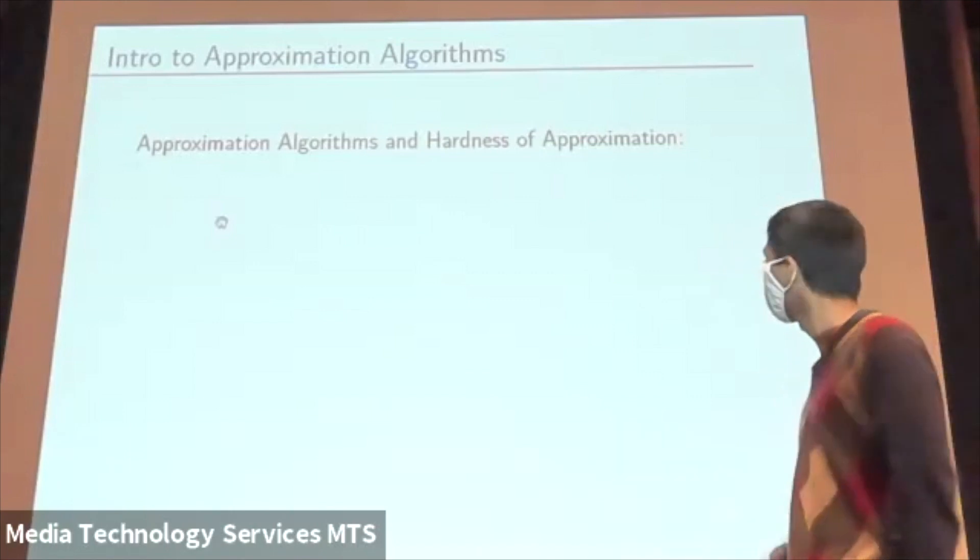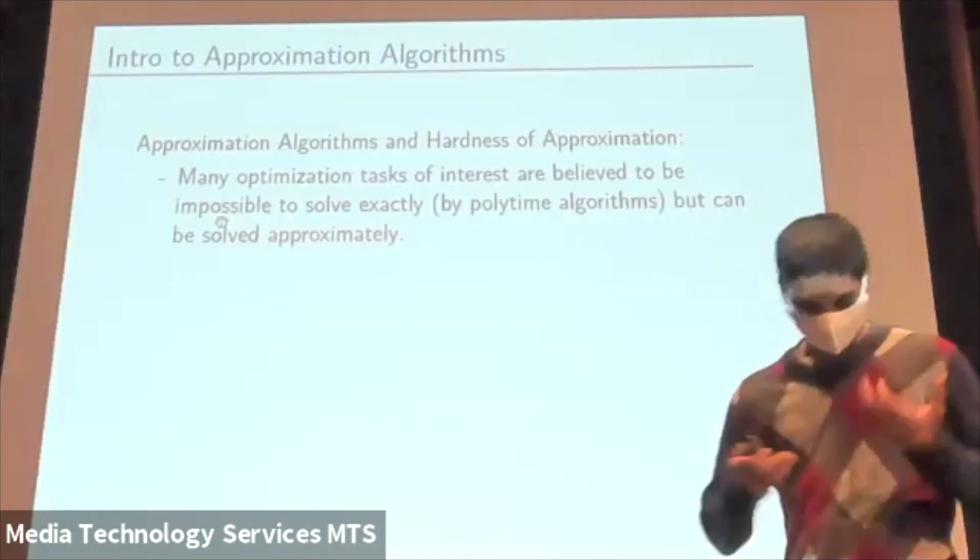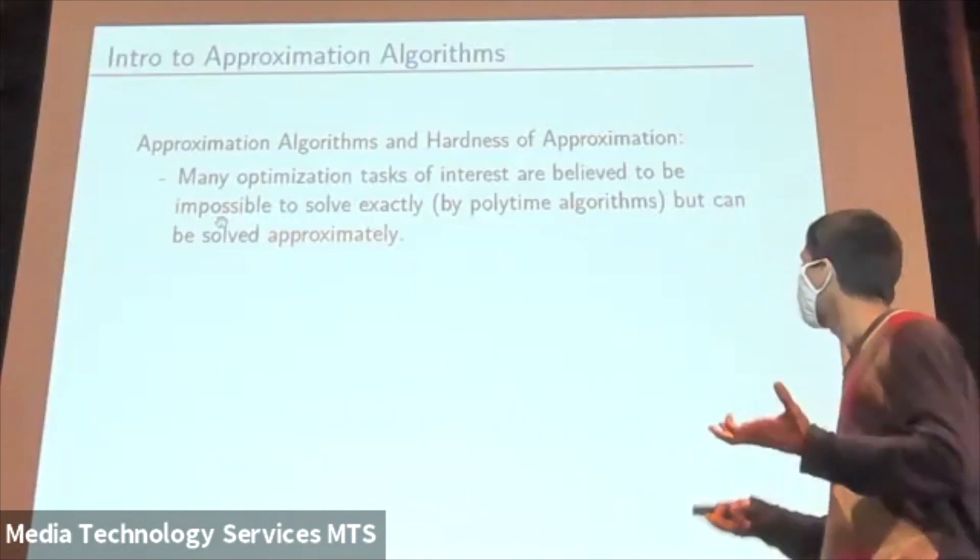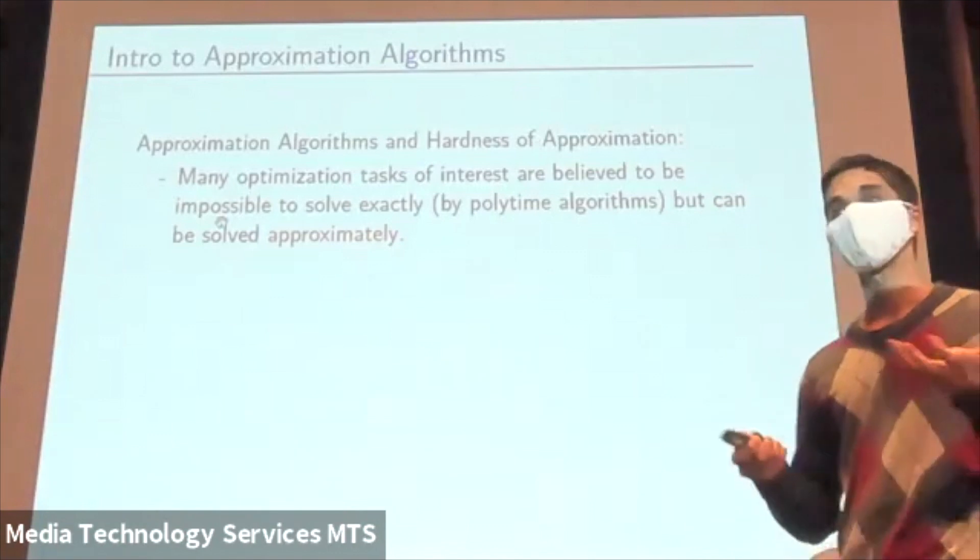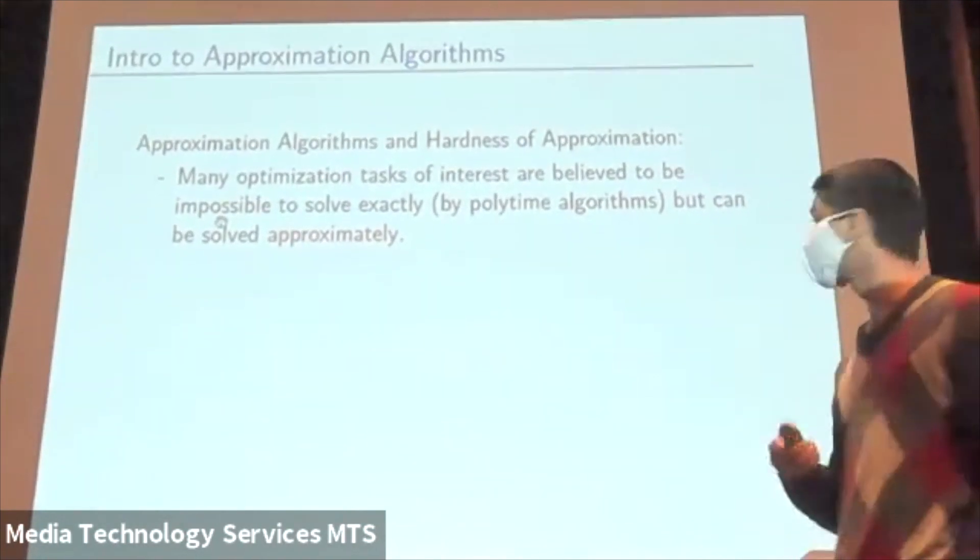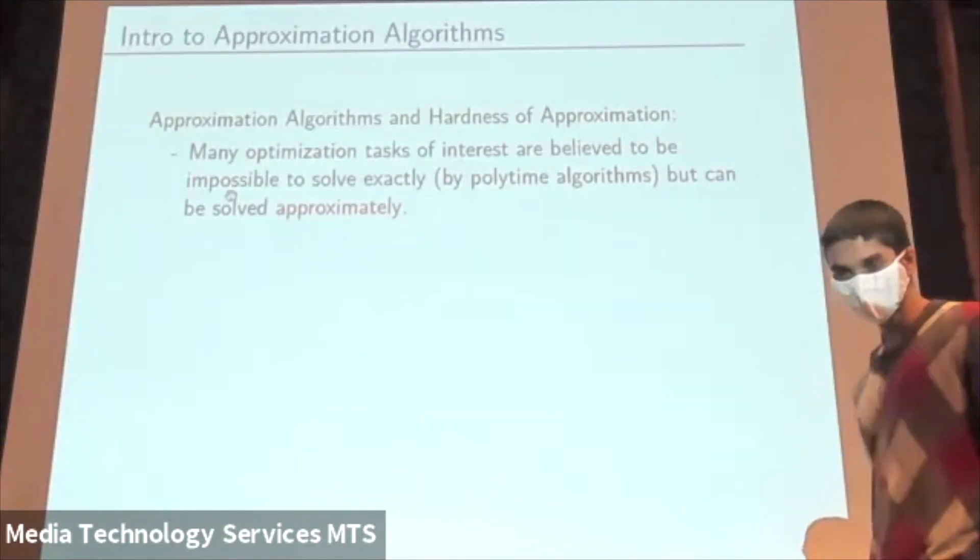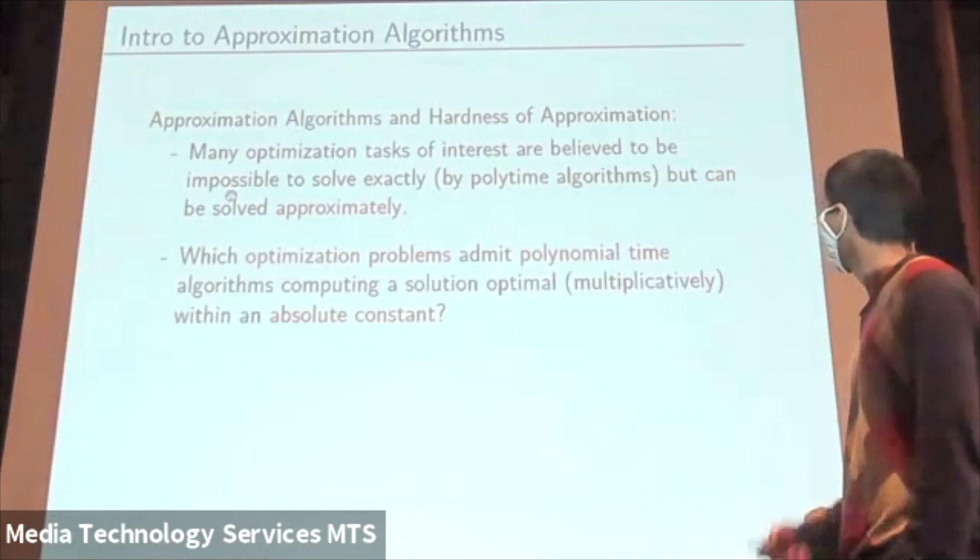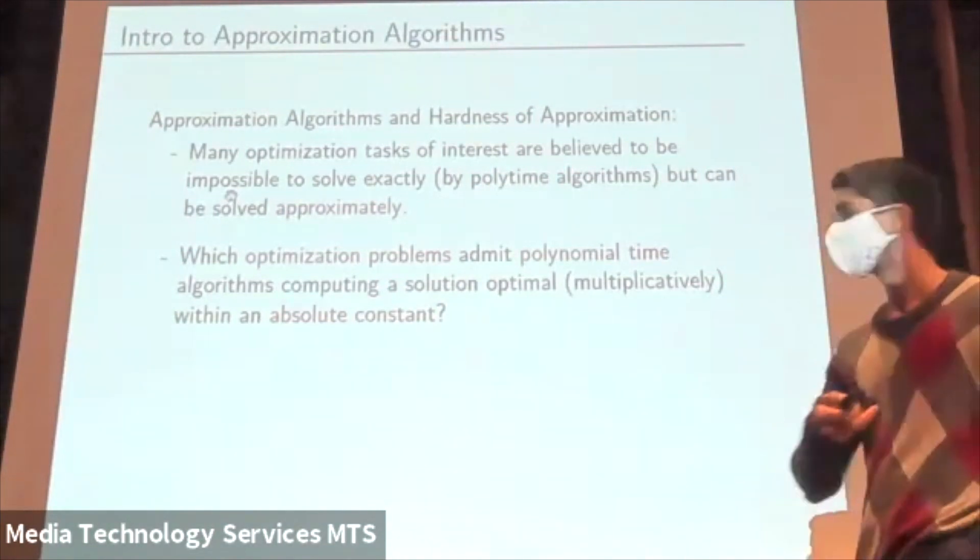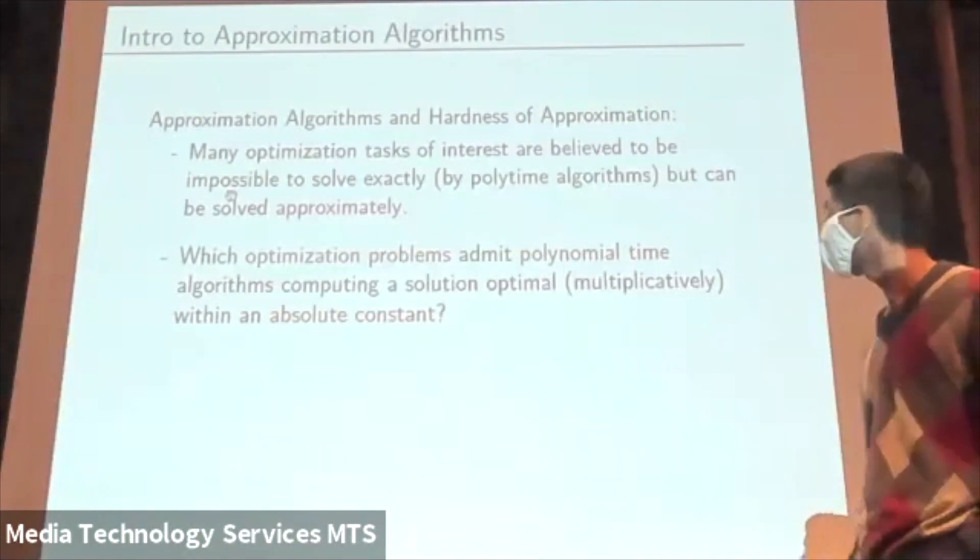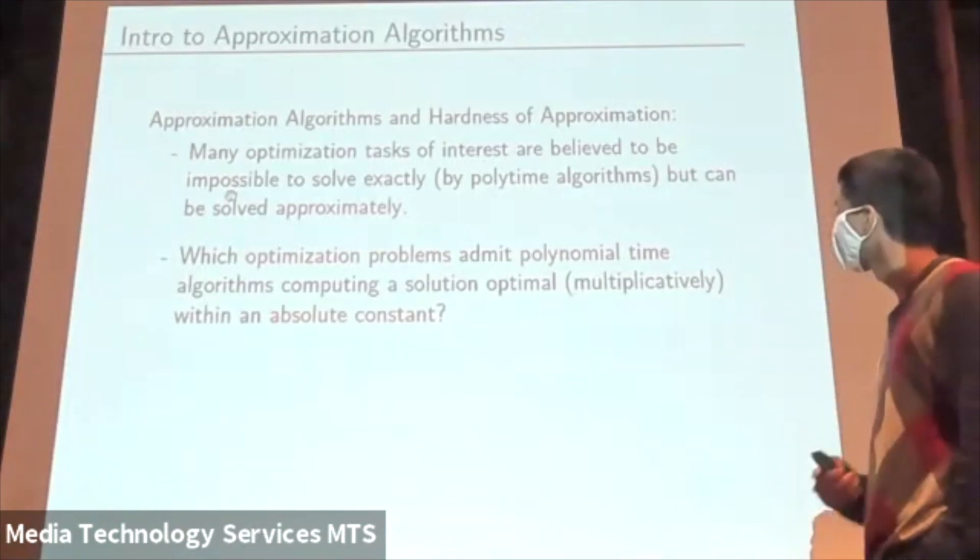I work in this area called approximation algorithms and hardness of approximation. Many optimization problems are believed to be hard to solve exactly, but they can actually be solved approximately. We can get constant factor approximation to the optimal. The question is, which optimization problems admit polynomial time algorithms that get a constant factor approximation, multiplicatively?